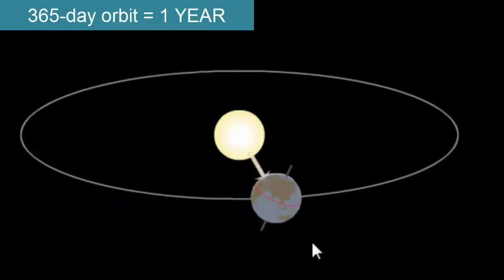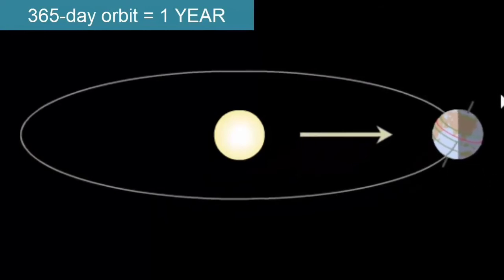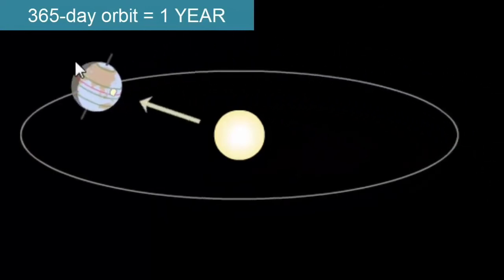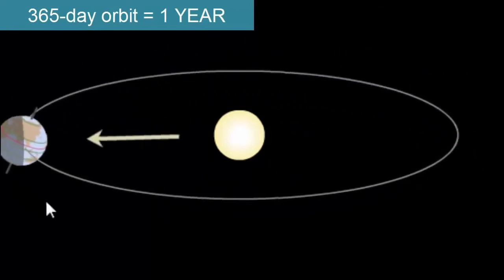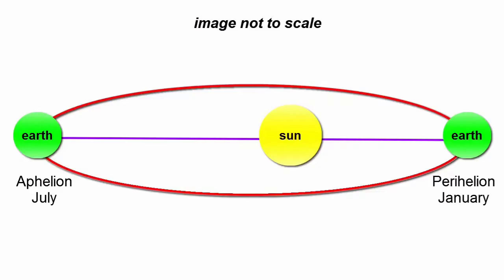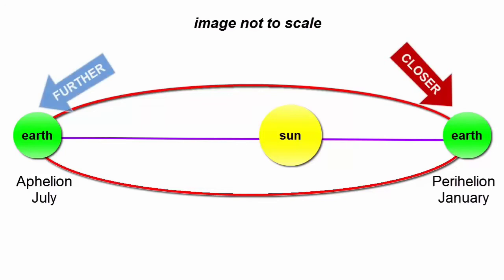During Earth's orbit around the Sun, it follows a nearly circular path, but with a small elliptical eccentricity. The Sun is not in the center of the ellipse, but at one of the focal points. The Earth is a little closer to the Sun every January and a little further away every July.